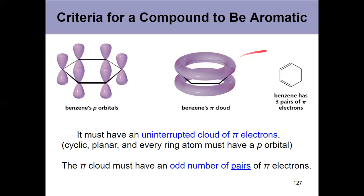Like this couldn't be aromatic if there was something that was sp3 hybridized, interrupting it. It's cyclic and planar to give that uninterrupted cloud of pi electrons.